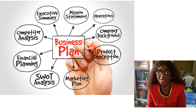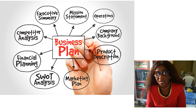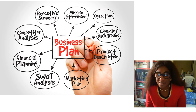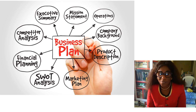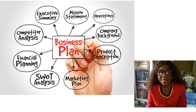Then come the business operations — how is the business going to be operated. You must give the company background: how it originated, what it is about, what type of products you are going to offer the public, your marketing plans, financial plans, competition analysis, and the strengths and weaknesses of your business.